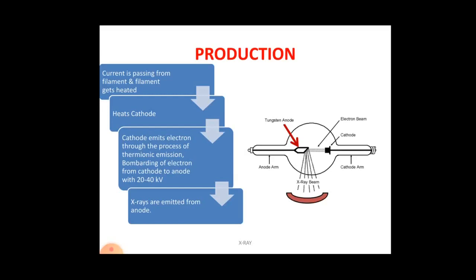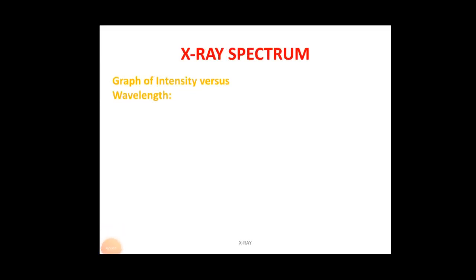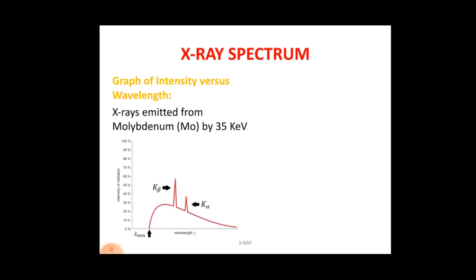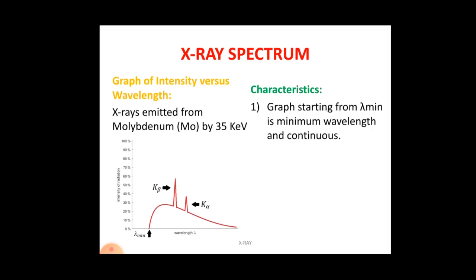Now let us see the graph of intensity versus wavelength. Intensity is on the vertical axis and wavelength on the horizontal axis. As a sample, the graph for molybdenum — atomic number 42 — is given, bombarded with 35 kilo electron volt energy. The first characteristic of this graph is that it starts from lambda minimum, which is the minimum wavelength. X-rays of different wavelengths have different intensities and the spectrum is continuous — the line of the graph does not break anywhere.